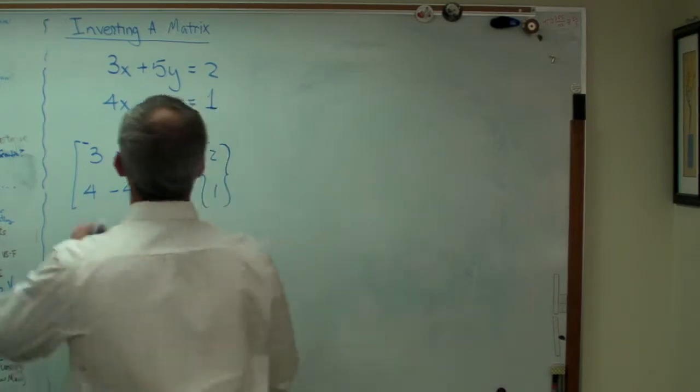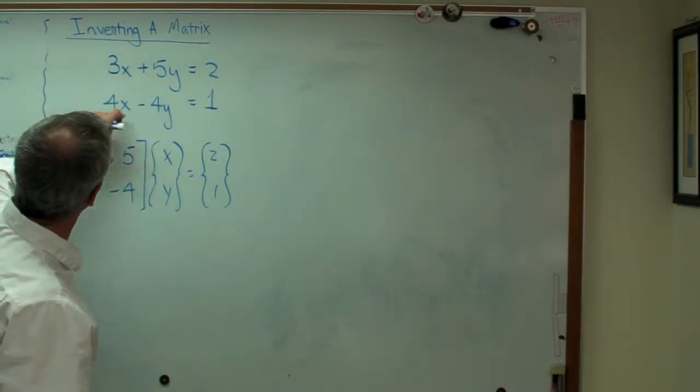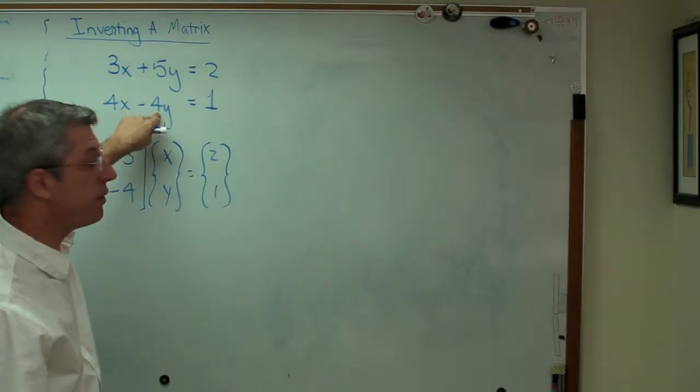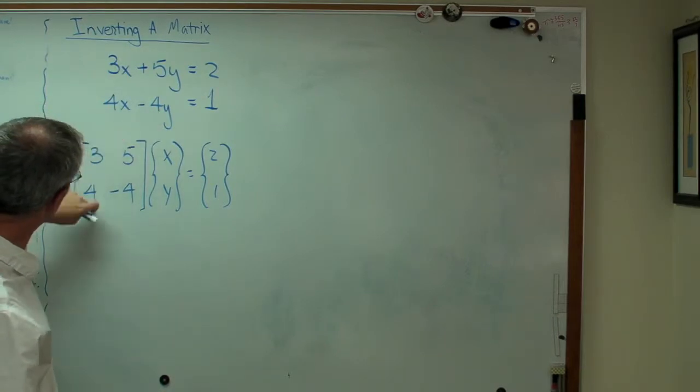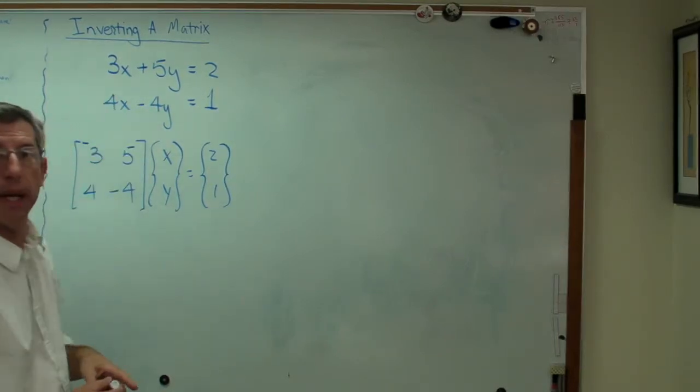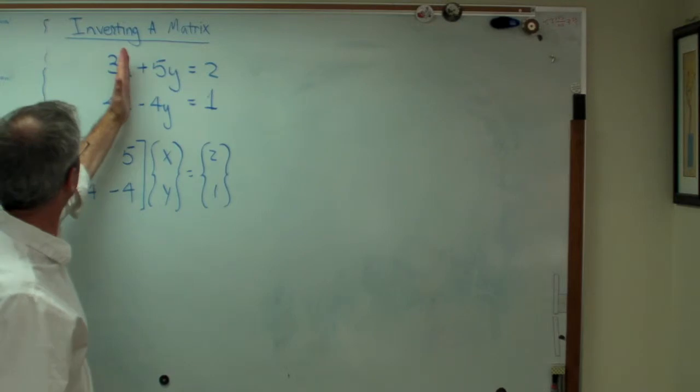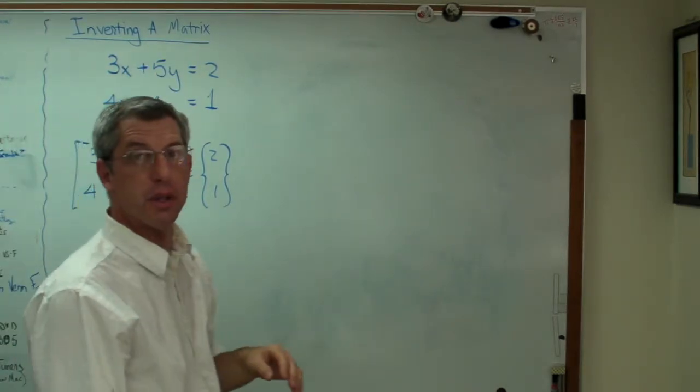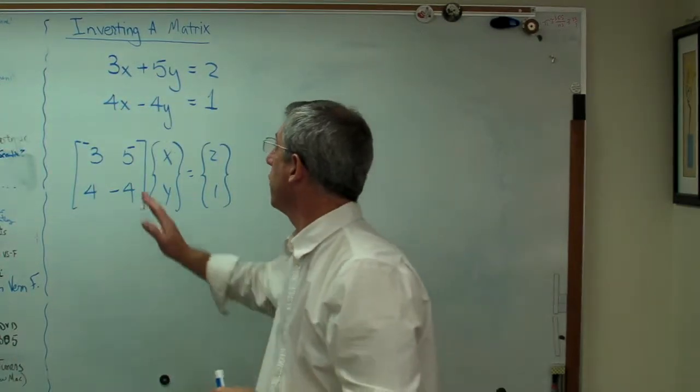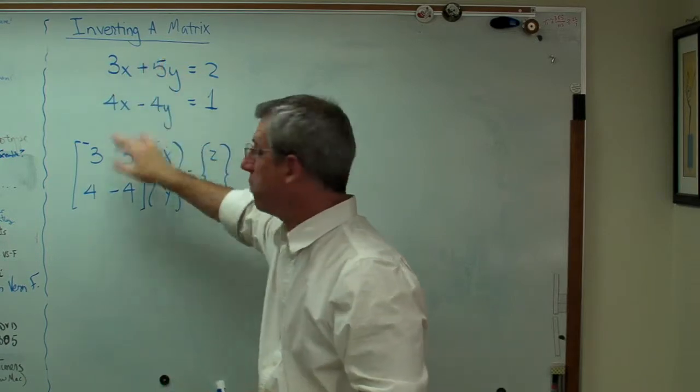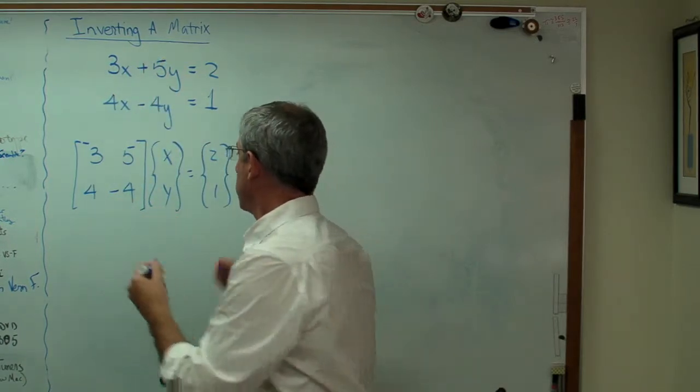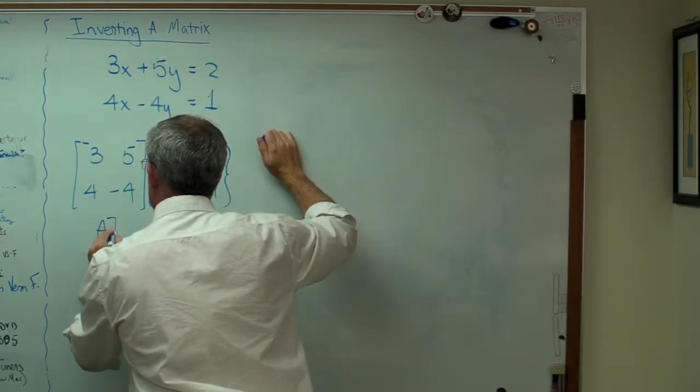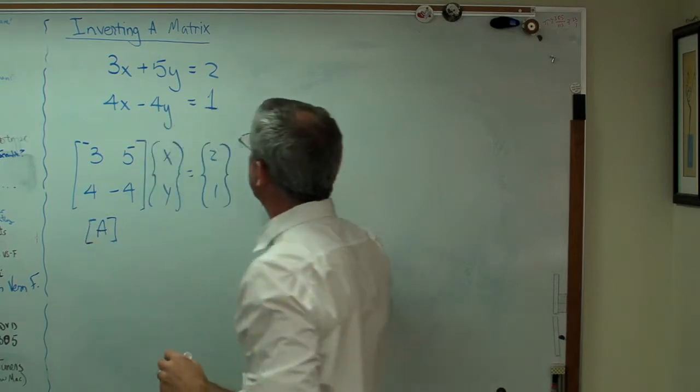So to get the matrix here, I start with the coefficients in front of these variables: 3, 5, 4, minus 4, right where you see them. Notice that the X and Y terms line up with each other. It's very important that you have those in the right place when you write this out. This is a matrix I'll call A.